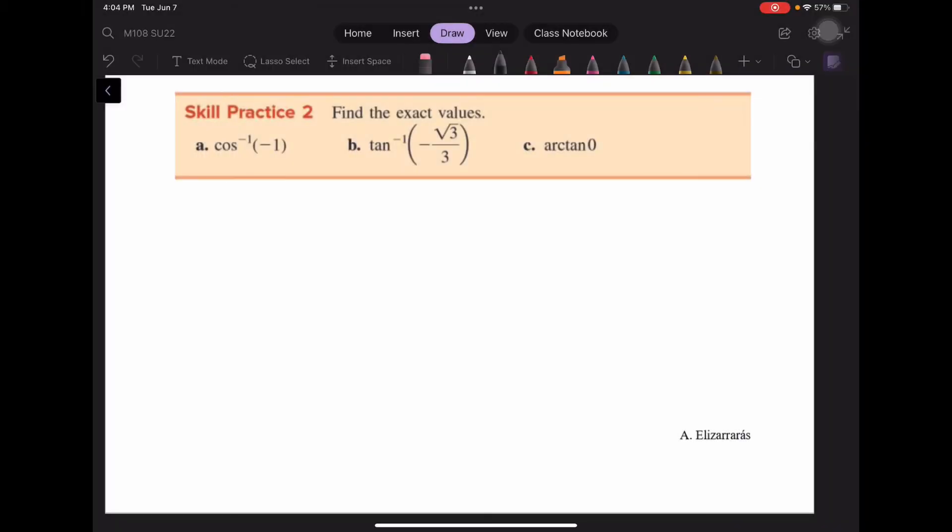Skills practice 2, we're finding exact values of cosine inverse and tangent inverse. The cosine inverse of negative 1 is saying that the cosine of some angle is equal to negative 1. And remember that cosine is going to be restricted just like sine was restricted, except we are restricting the cosine to 0 to pi.